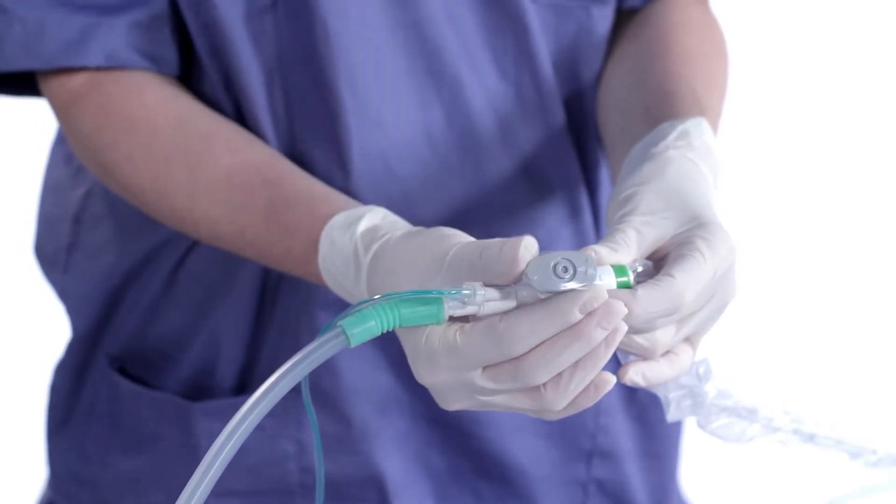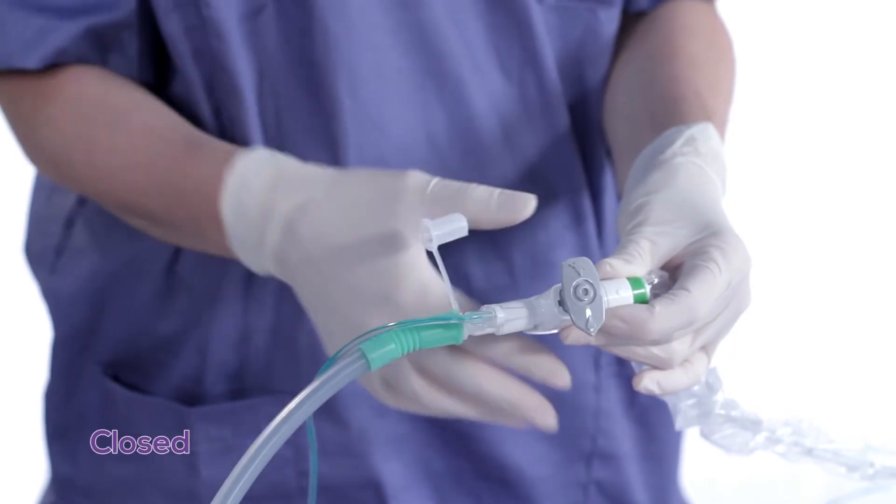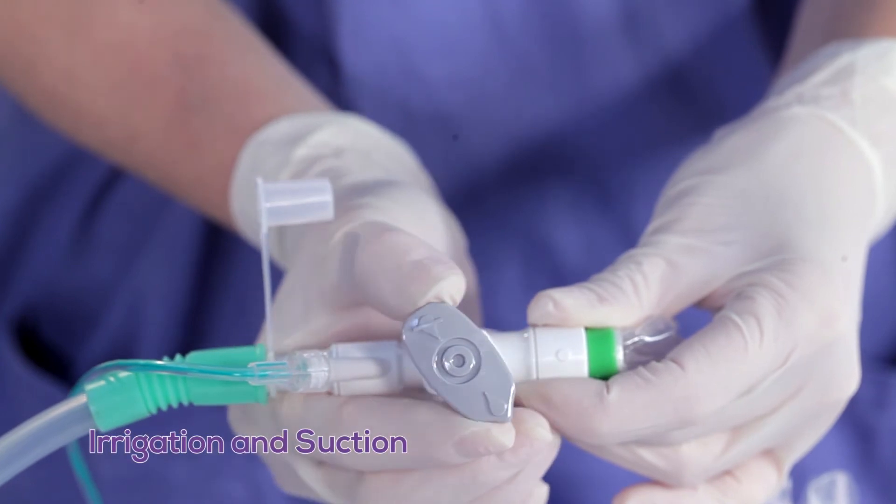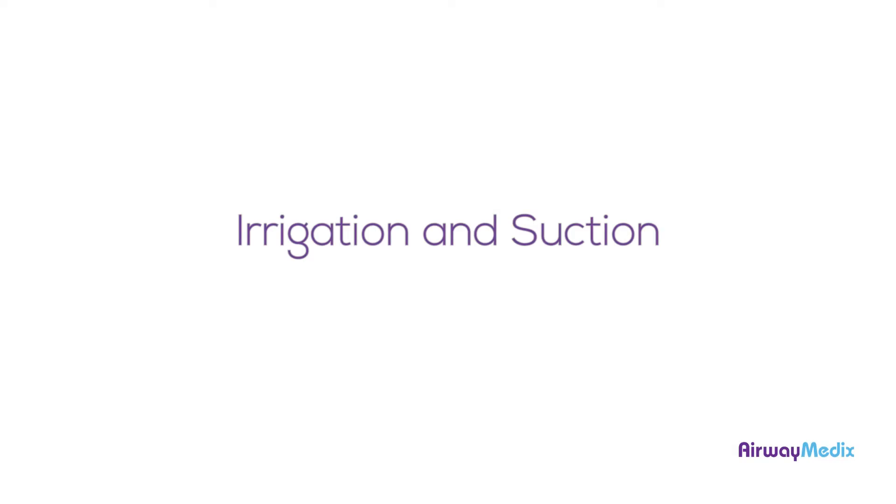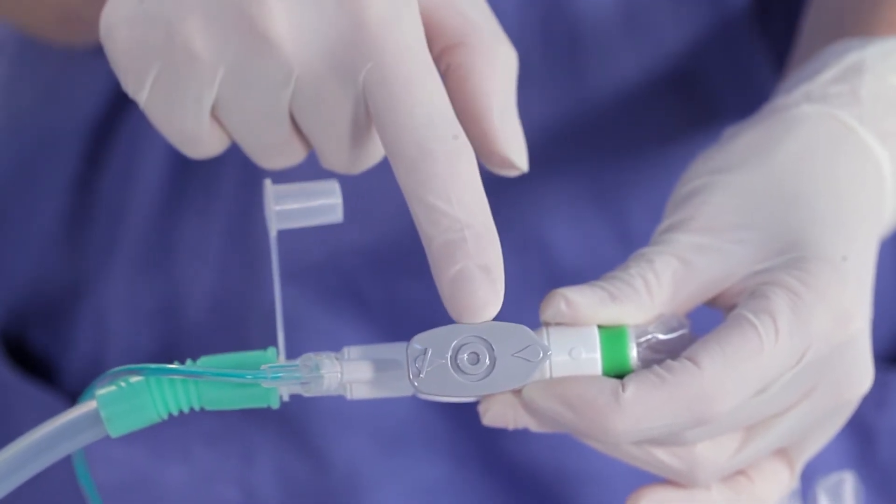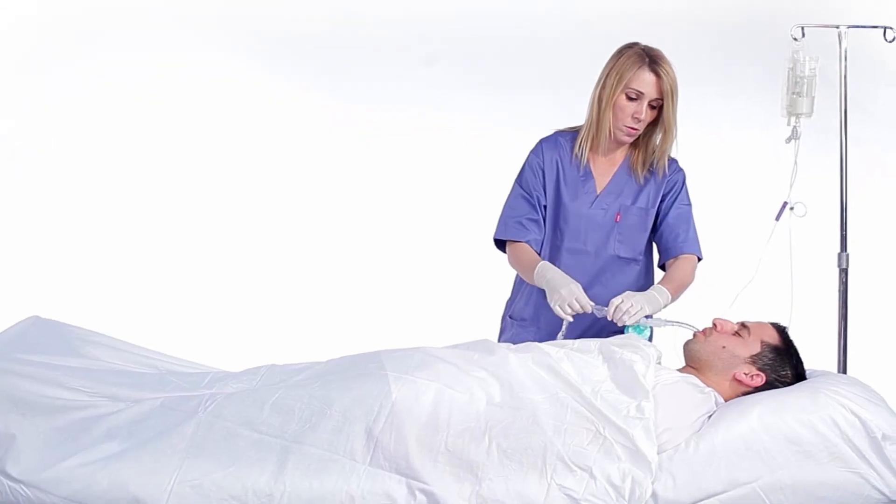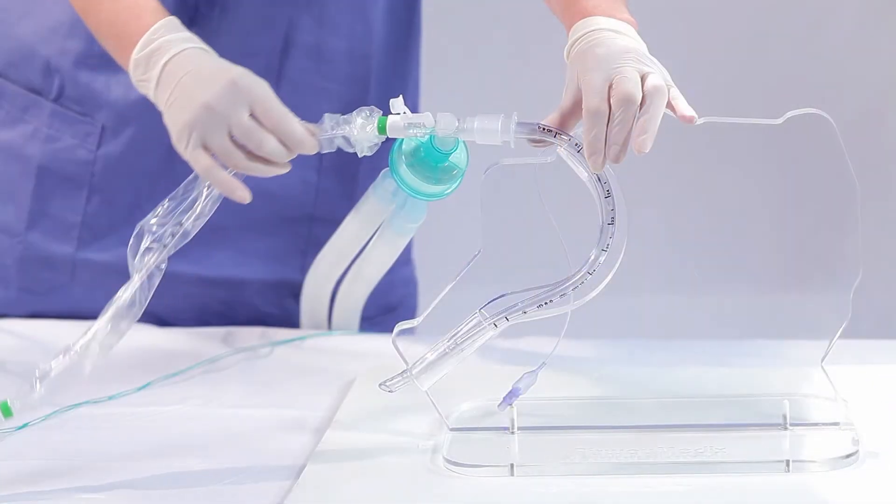To activate the closed suction system, set the Airway Medics using the thumb control valve, which has three settings: suction only, closed, and irrigation and suction. To use irrigation and suction simultaneously, turn the thumb control valve to the on position.